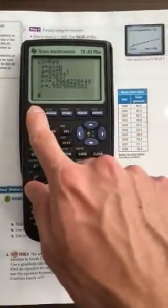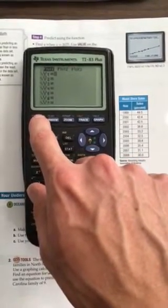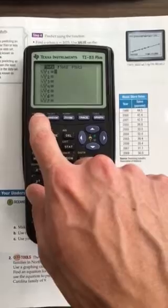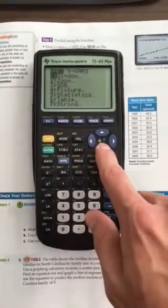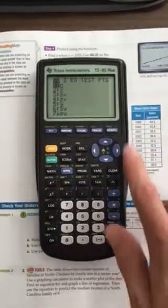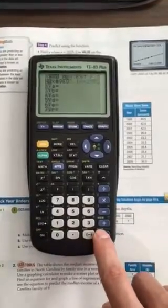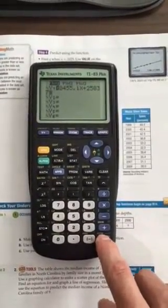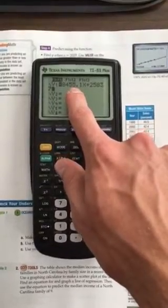Now we'll go into our Y= screen. Since we've already calculated our equation, we just need to copy it into this screen. We'll go to VARS and then down to statistics, hit enter, and we'll go over to equations and choose regression equation, hit enter. Now it's copied our regression equation into our first spot here.